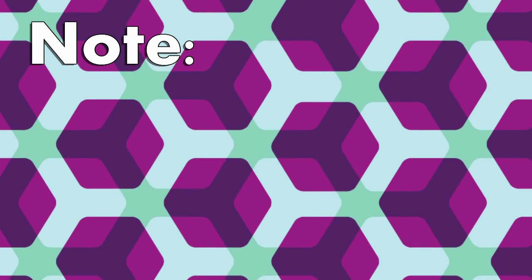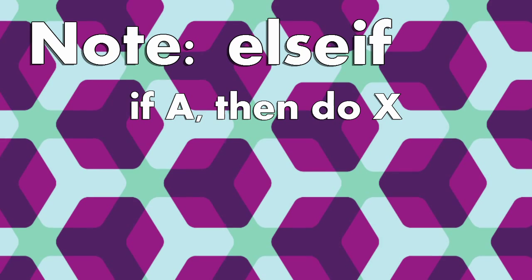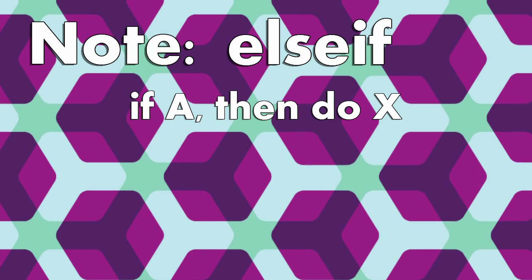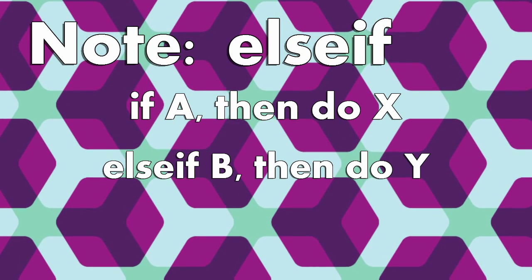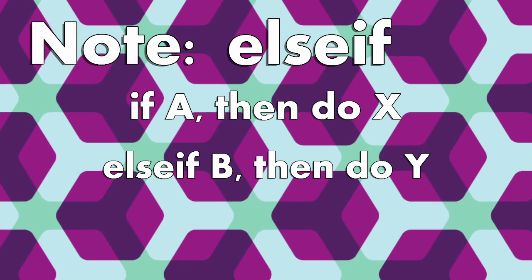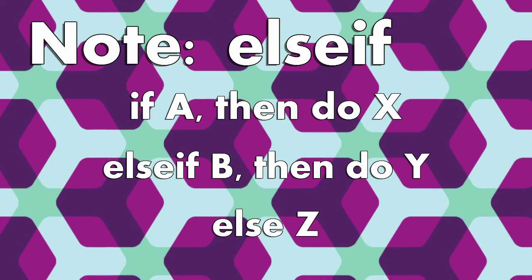One thing to know is that you can add more than one condition by using something called else if. So your code would be: if A, then do X; else if B, then do Y; else C.